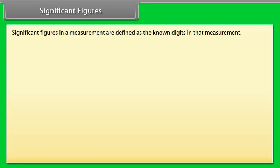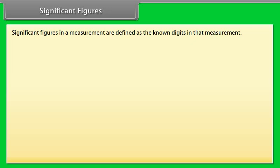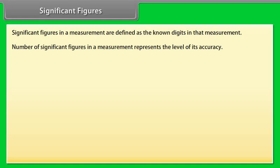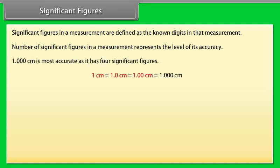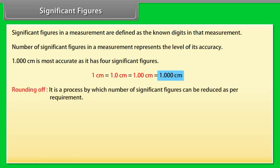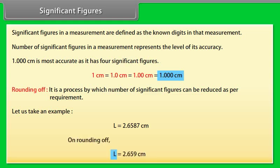Significant figures: Significant figures in a measurement are defined as the known digits in the measurement. The number of significant figures in a measurement represents the level of its accuracy. It means more the number of significant figures in a measurement, more accurate that measurement is. Let us take an example: 1.000 cm is most accurate as it has four significant figures. Rounding off: It is a process by which the number of significant figures can be reduced as per requirement. Let us take an example: L = 2.6587 cm. On rounding off, L = 2.659 cm.